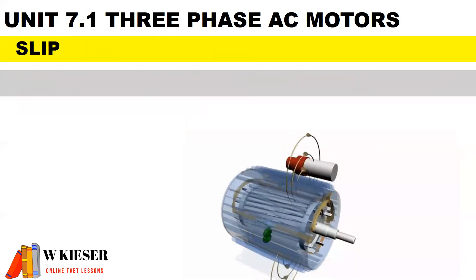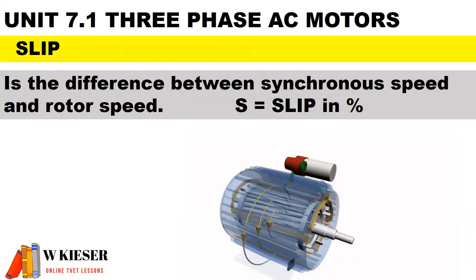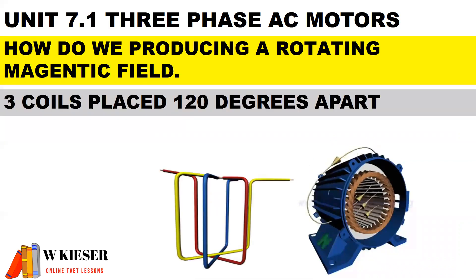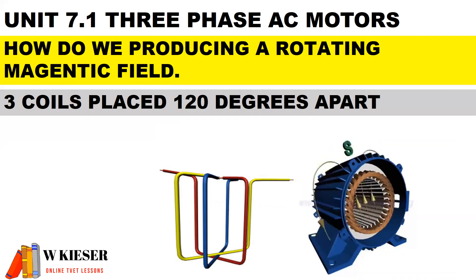What is the term slip? Slip is the difference between synchronous speed and rotor speed, and is represented by a percentage — the symbol is S. How do we produce a rotating magnetic field around the stator? Three coils placed 120 degrees apart means that when current passes through the coils, they'll also be out of phase with each other by 120 degrees. The magnetic field set up by each coil is combined to produce the rotating magnetic field, and this rotates at synchronous speed.